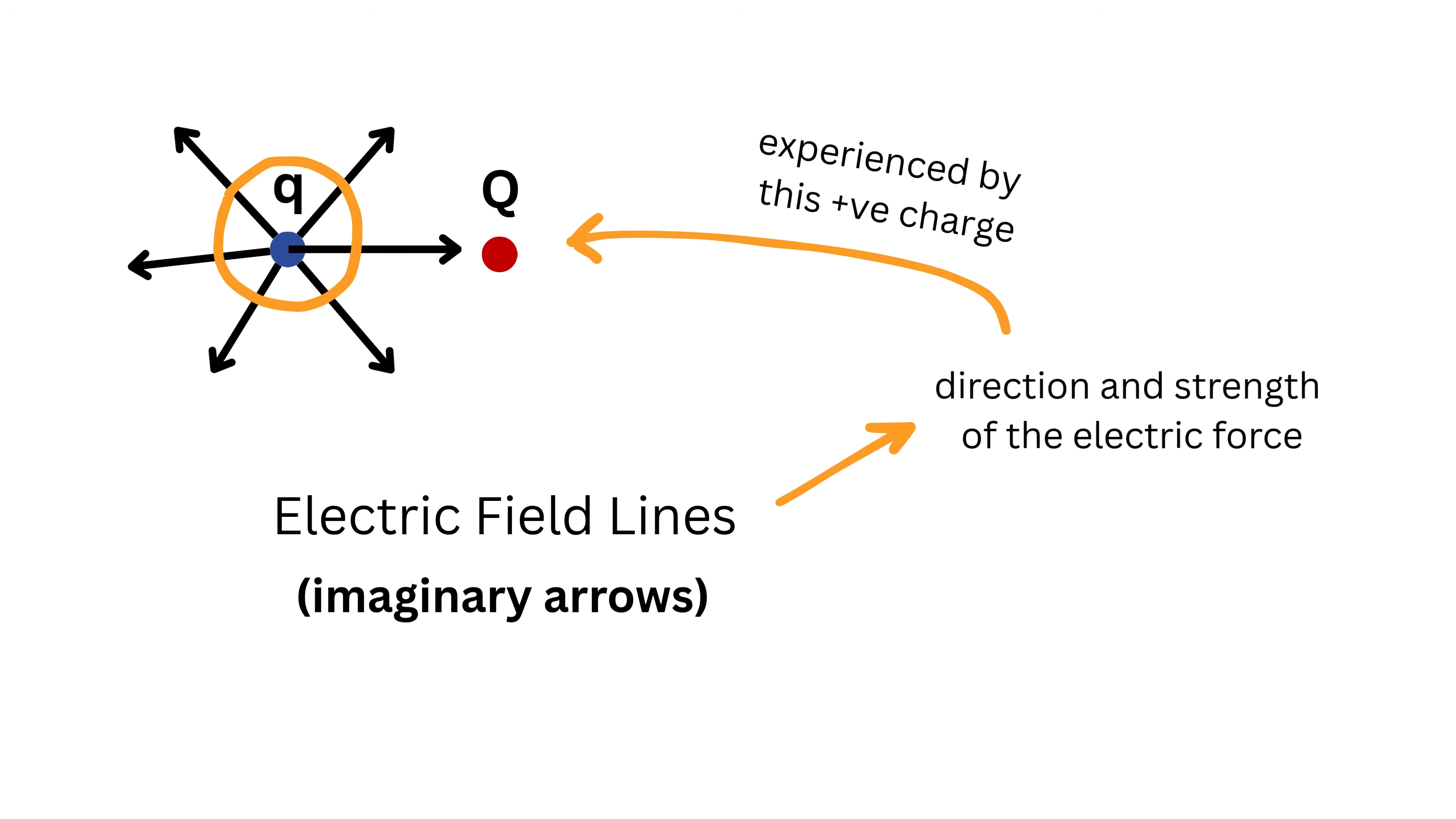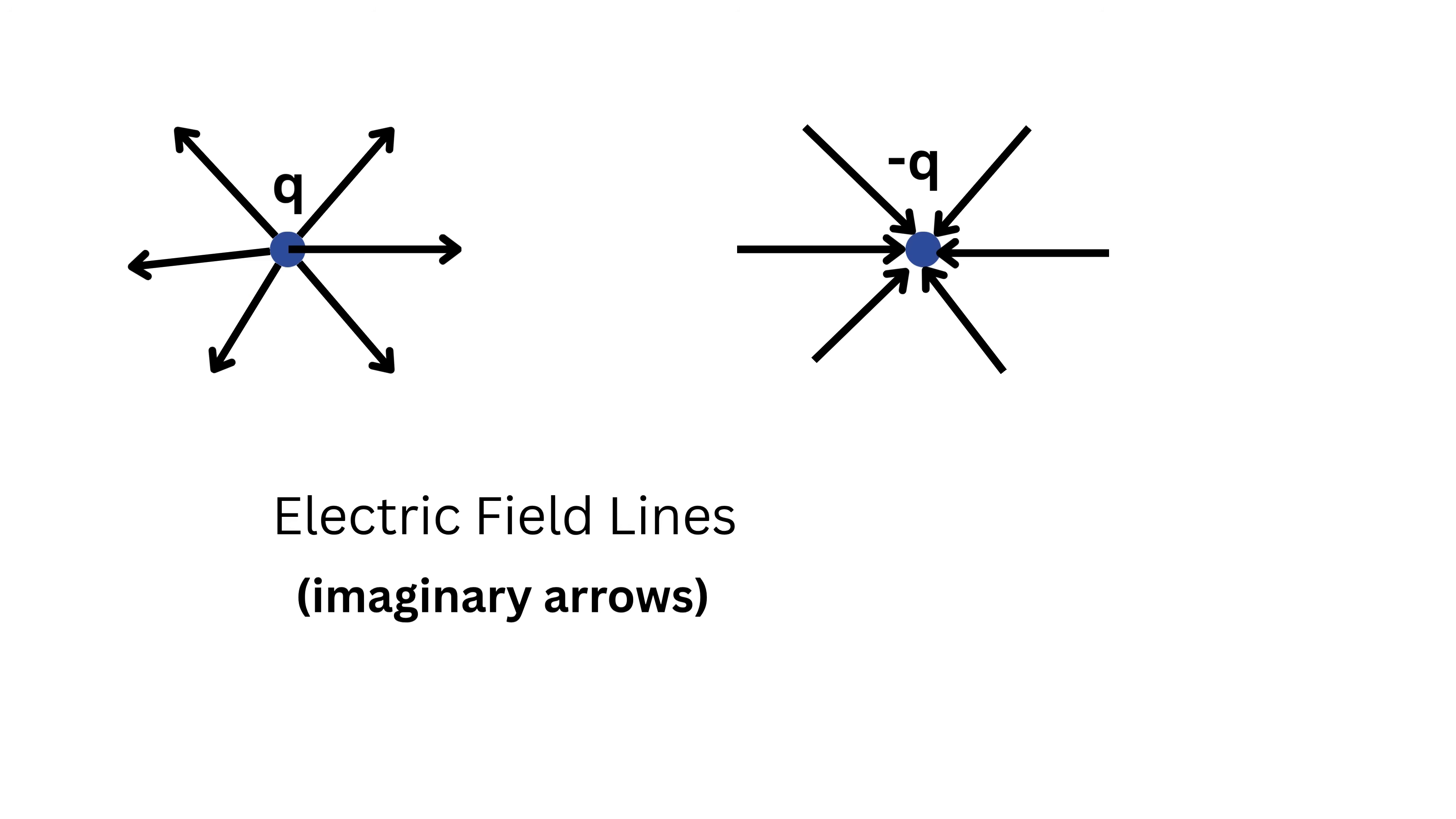For example, around a single positive charge, the electric field lines spread out evenly in all directions like rays from the sun, showing that the force pushes other positive charges away equally in every direction. Similarly, around a negative charge, the electric field lines all point inward toward the charge, showing that it pulls positive charges toward itself from every direction.